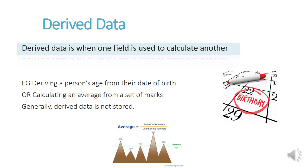Derived data is when one field is used to calculate another. Examples are deriving a person's age from their date of birth, or calculating an average from a set of marks. Generally, derived data is not stored because you can calculate it.